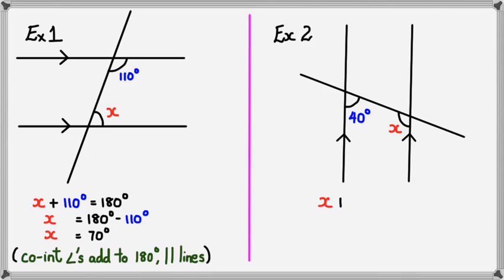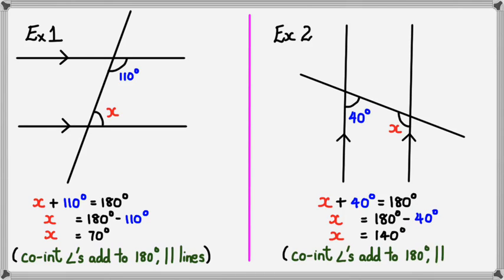And because of that, X plus 40 degrees equals 180 degrees. Rearranging, I'm going to get X equals 180 take away 40, which means X is actually equal to 140 degrees. And of course, don't forget the geometric reasoning, which is co-interior angles add to 180 degrees on parallel lines. All right, that's about it for this session guys. I hope that all sunk in, but thank you for watching.